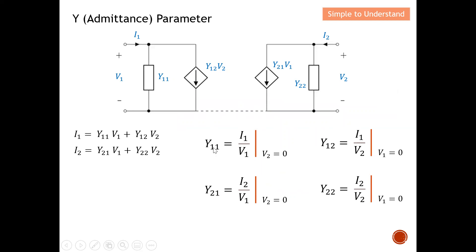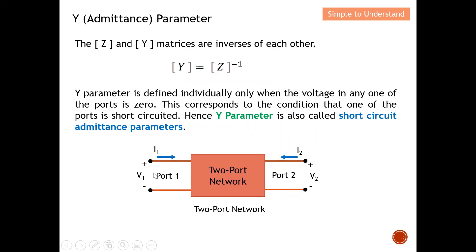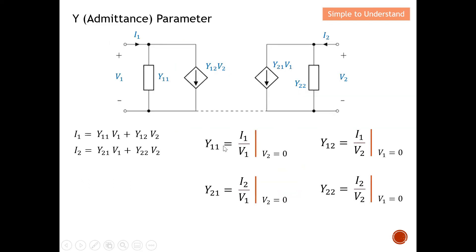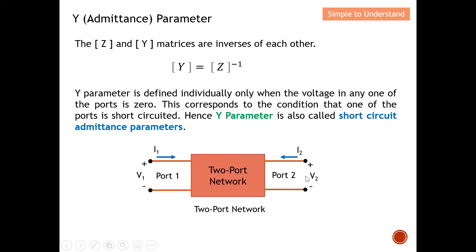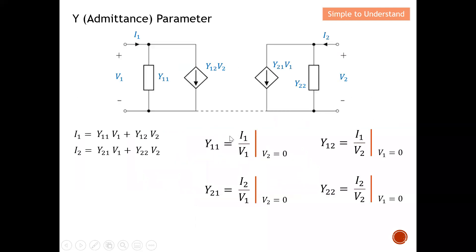Y11 is defined as I1 over V1 while V2 equals zero, meaning the output port is short-circuited. With V2 equal to zero, nothing contributes from the output side, so Y11 can be found directly from the input side. For Y12, V1 is set to zero — the input port is short-circuited — so I1 equals Y12 times V2, and Y12 is found as I1 over V2.